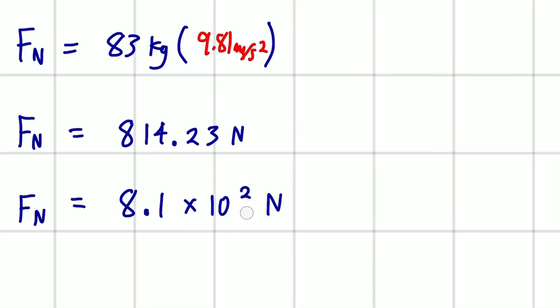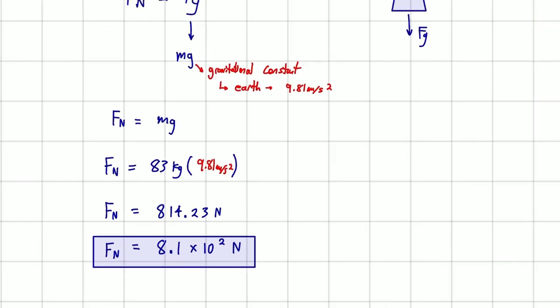So Fn is going to be equal to 8.1 times 10 to the 2 newtons. And if you want to know where I got this 10 to the 2, well, I'm moving this decimal back two places. So it's times 10 to the 2. And we're going to keep just 2 significant digits. And that is our final answer. Thank you.